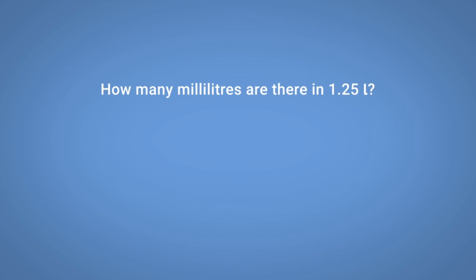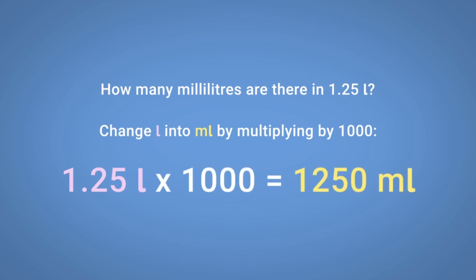How many millilitres are there in 1.25 litres? We can change litres into millilitres by multiplying by 1000. 1.25 litres multiplied by 1000 equals 1,250 millilitres.